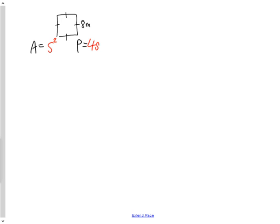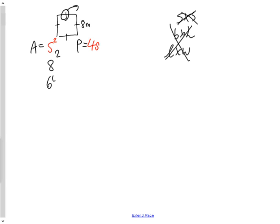The first question is a square — we know it's a square because the little lines indicate all four sides share the same length. The formula for area of a square is side squared. Since the side length is 8, we substitute to get 8 squared, which equals 64. Since we're dealing with area, the answer is 64 meters squared.